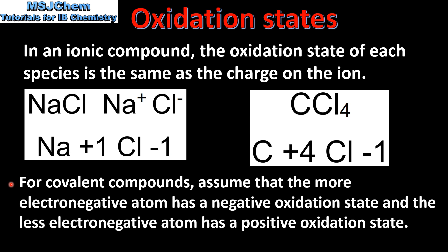For covalent compounds, assume that the more electronegative atom has a negative oxidation state and the less electronegative atom has a positive oxidation state. For example, carbon tetrachloride CCl₄ is a covalent compound. Chlorine has a higher electronegativity than carbon, so we give chlorine the negative oxidation state and carbon the positive oxidation state.